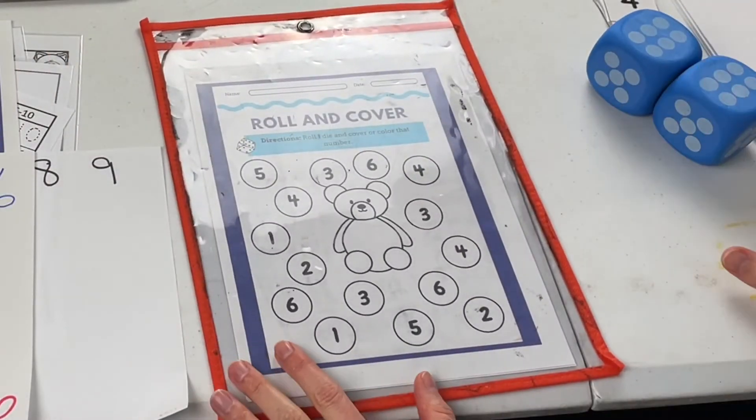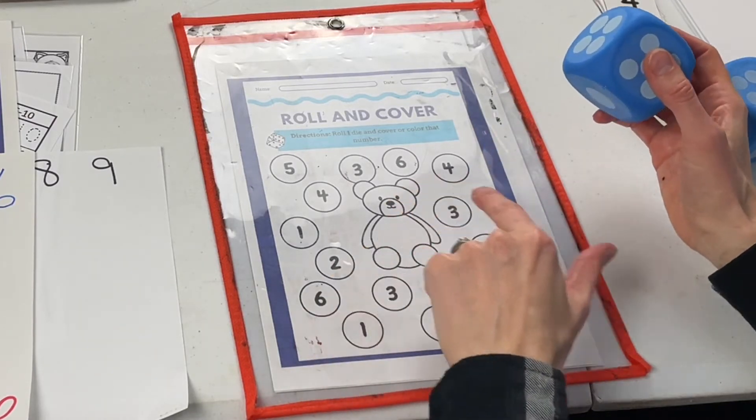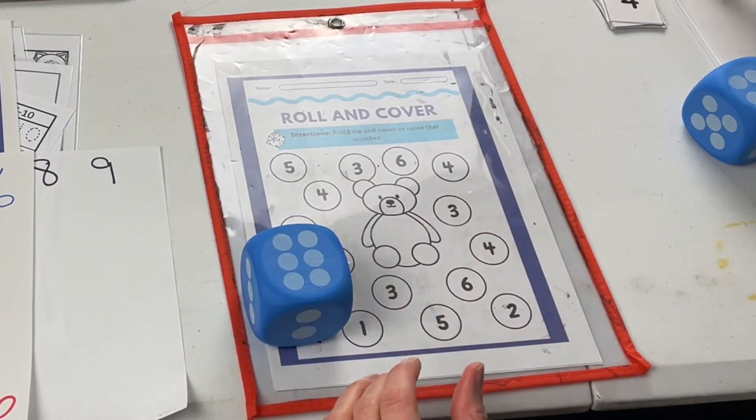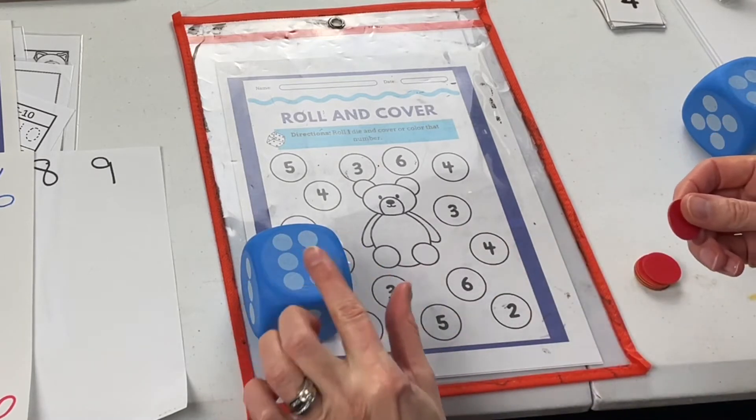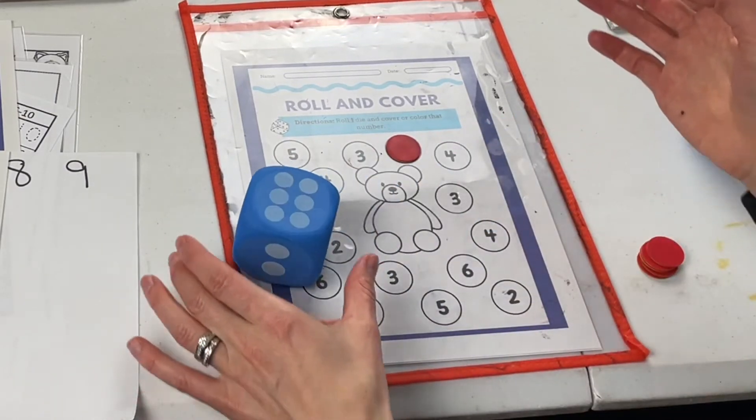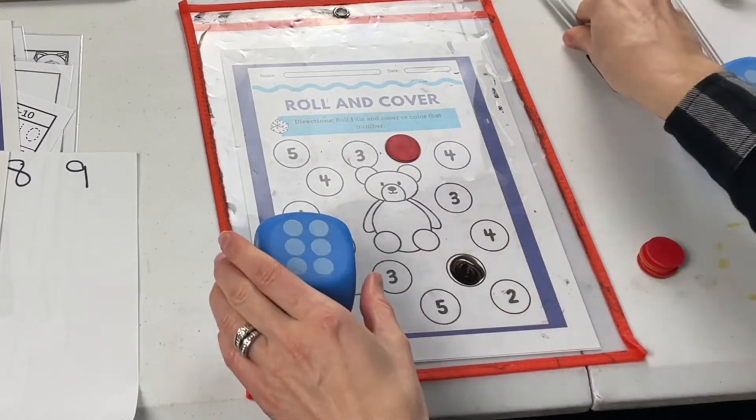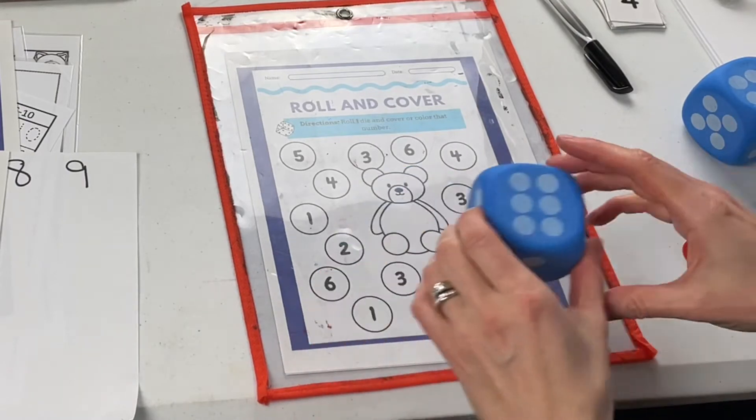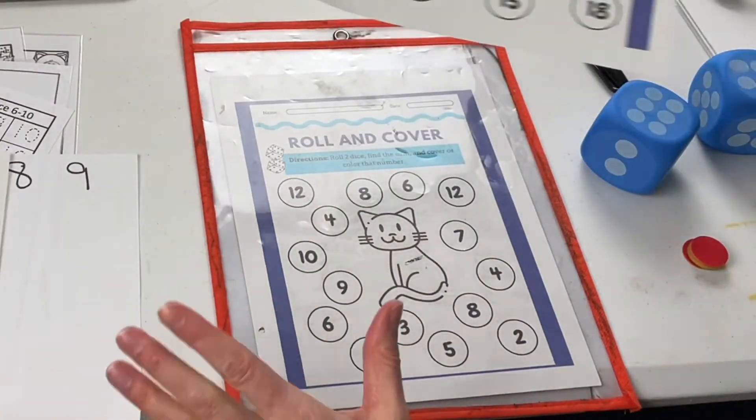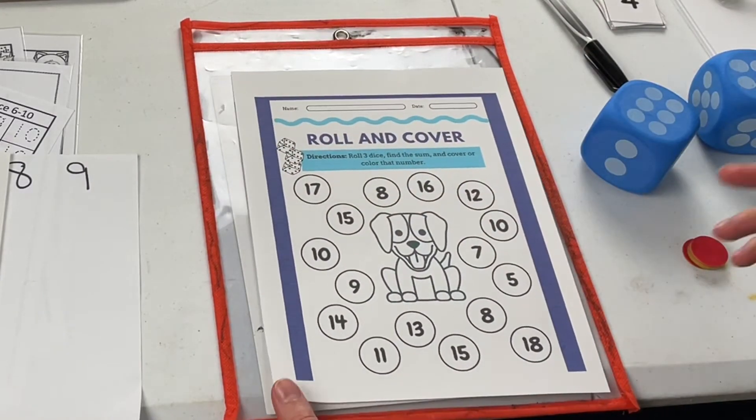Next we're going to talk about roll and cover. So this is one you can print out. This one starts with one die and you'll roll. And this is where you can use either some counters. They'll identify number six and then they will find it on their game board. You could also use a marker and just cover that spot as well. Roll and cover starts with one, and then there's another page that has two dice and they'll find the two dice and they'll find the sum. And then there's another one that has three dice and they'll find the sum. Same way to play.